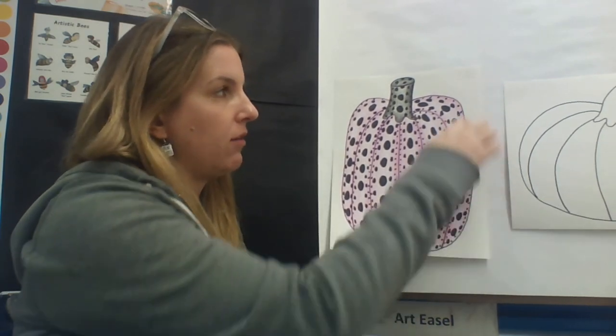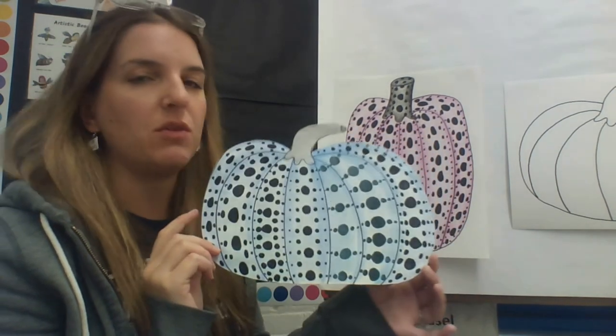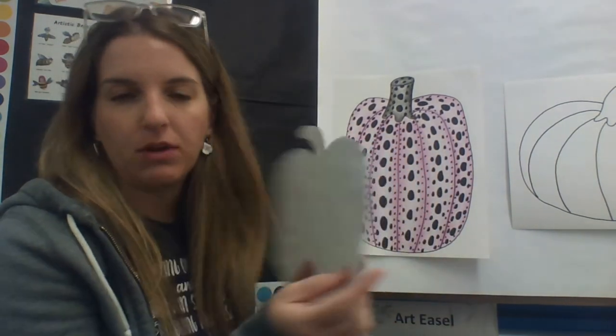Once you're done, you can either just keep it on the paper like this, or if you want to, you can take a pair of scissors and carefully cut out your pumpkin just to give you a different shape to look at. Just make sure you keep your name on the back.